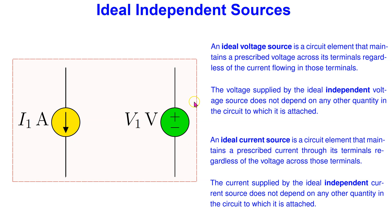The current in an ideal independent voltage source can flow from positive to negative terminal or negative to positive terminal, and can also be zero, and this is all perfectly fine. Similarly, the voltage drop across an ideal independent current source can be any polarity and can even be zero, and this is also perfectly fine for the ideal independent current source.